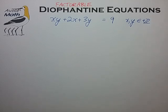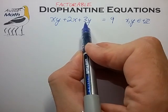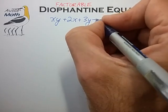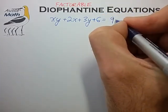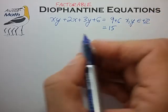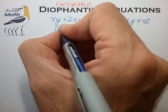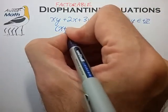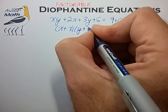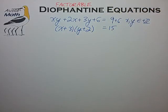As we found last time, we can take the coefficients of x and y, multiply them, and add to both sides. And now we can factor the left side into a very useful form. In this case, x plus 3 times y plus 2 is equal to 15.